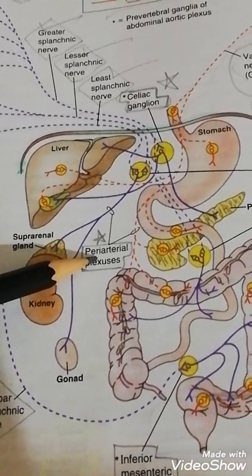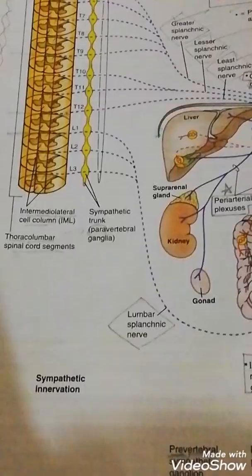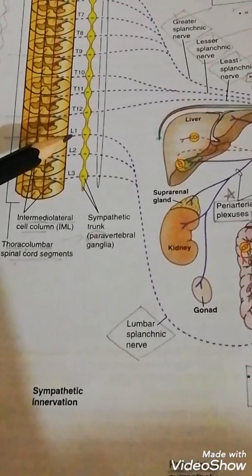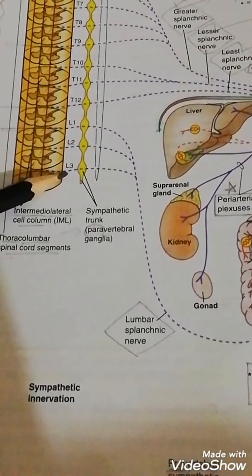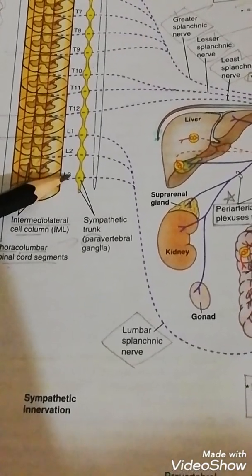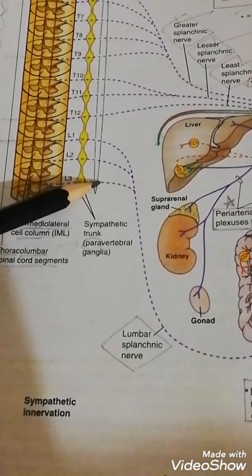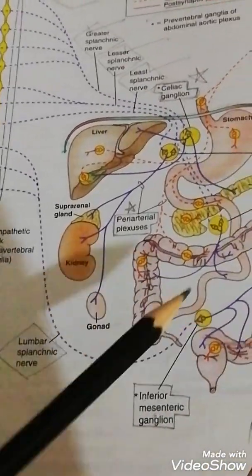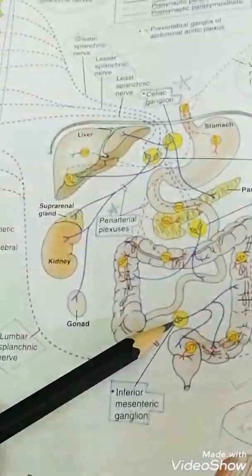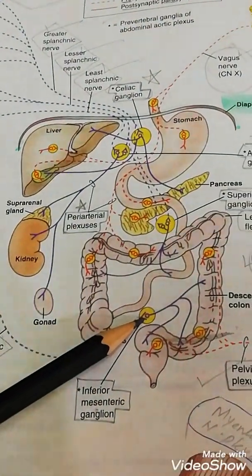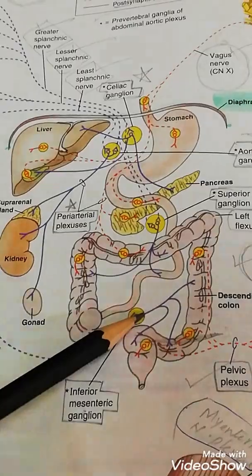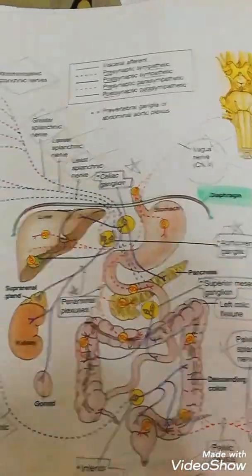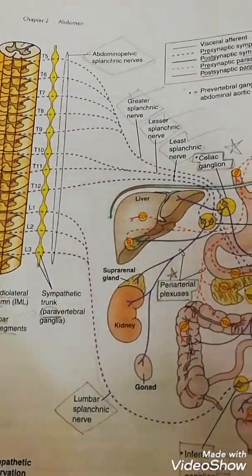Now concentrate on how the lumbar splanchnic nerve is formed. L1, L2, L3 of the spinal cord segment give rise to preganglionic sympathetic fibers that form the lumbar splanchnic nerve. They join the inferior mesenteric ganglion, and from here the postganglionic fibers supply the abdominal organs. So far we have learned about sympathetic innervation.